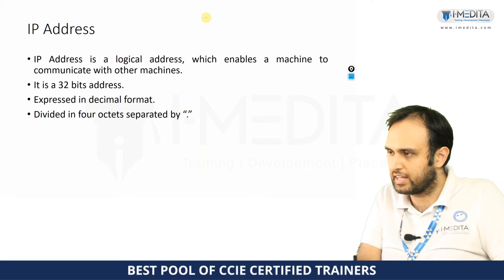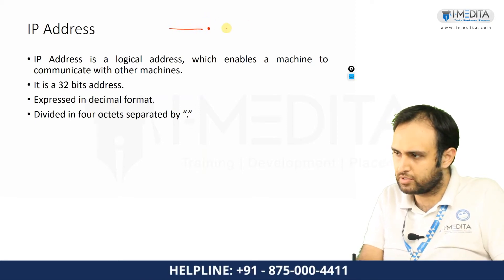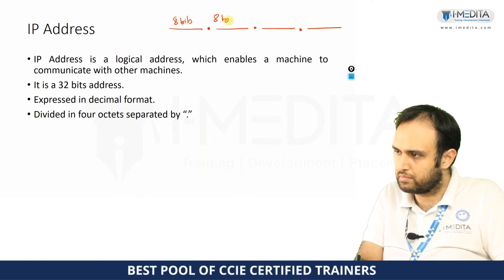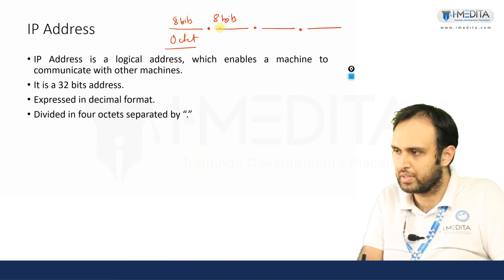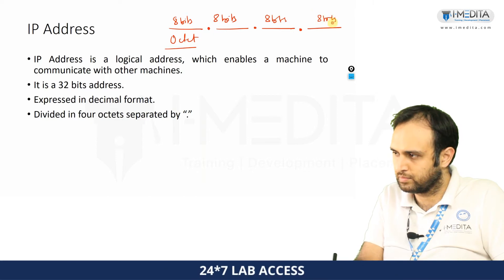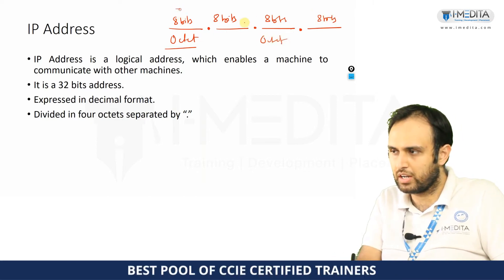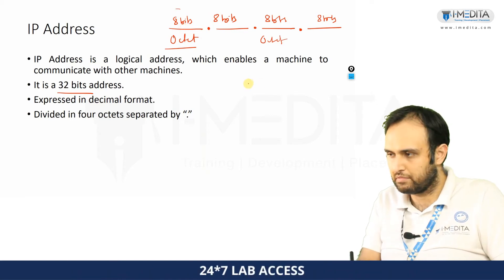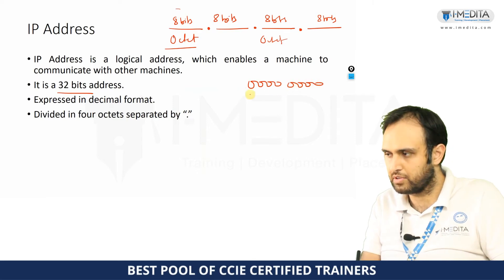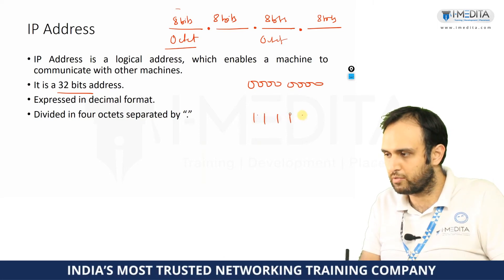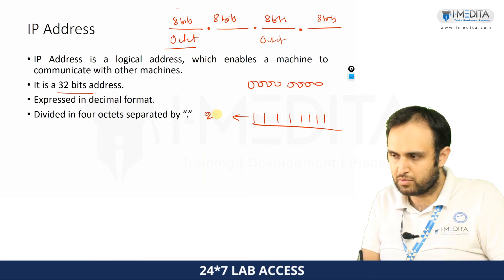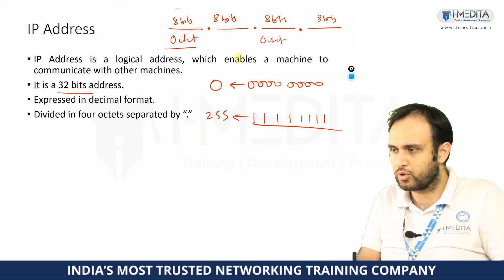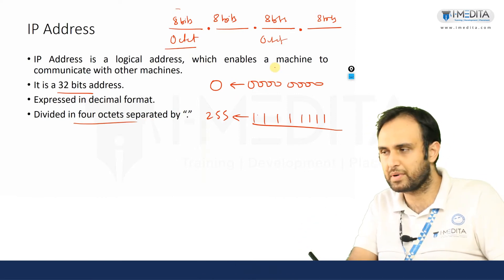Those 32 bits are divided into 4 parts. Each 8-bit part is called an octet, so we have 4 octets — all in all it becomes a 32-bit address. In any octet, the minimum value is all 0s, which equals 0, and the maximum value is all 1s — eight 1s — which equals 255. The 4 octets are separated by dots.